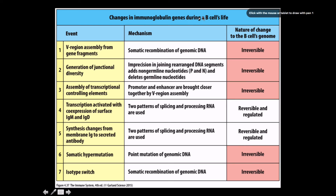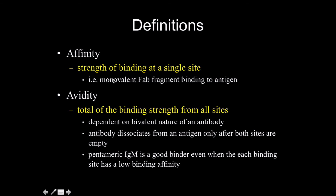This is a generalized overview of changes in immunoglobulin genes during a B cell's life. Somatic recombination of genomic DNA is irreversible — involving the RAG complex bringing V, D, and J segments together. Junctional diversity is generated by P and N nucleotide insertions. Assembly of transcriptional control elements brings the promoter and enhancer closer together through V-region assembly. Alternate RNA splicing allows production of both IgM and IgD isotypes, and switching between membrane-bound and secreted forms.